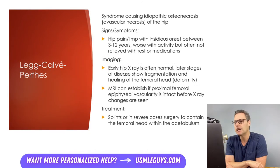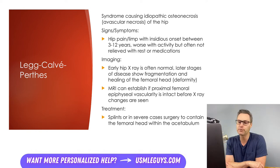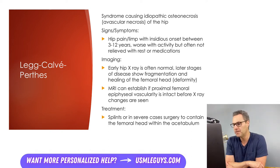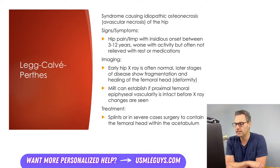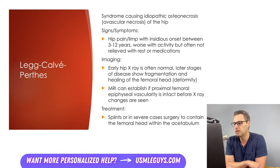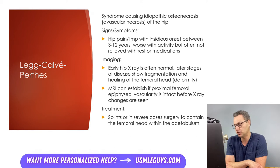Next up is Legg-Calvé-Perthes disease, a syndrome causing idiopathic osteonecrosis of the hip, also known as avascular necrosis of the hip. Boys are affected more frequently than girls, and the age of onset is between three and twelve years. The patient presents with insidious hip pain and a limp that is made worse with activity and may not be relieved with rest or medications. This is a difficult diagnosis because early hip x-rays are often normal; only in later stages will there be fragmentation and healing of the femoral head causing deformity. MRI with contrast can be employed to visualize whether the proximal femoral epiphyseal vascularity is intact before x-ray changes are seen, helping make a diagnosis when the index of suspicion is high.